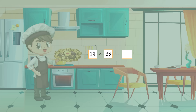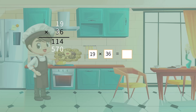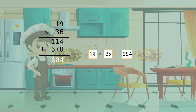We just need to do a column multiplication between 19 and 36. By adding partial products 114 and 570, we find 684 as our final product. So, Jason has baked 684 cookies in total.